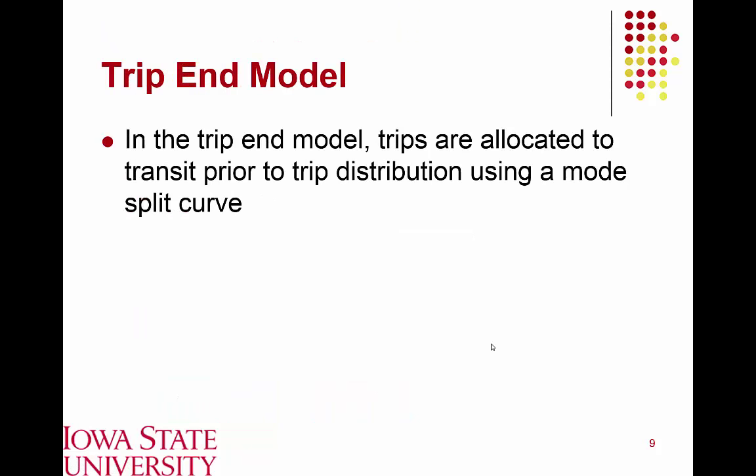The second model, the trip end model, determines prior to trip distribution how many trips are going to be made by each mode — essentially going back to step one, the trip generation step. Under the trip end model, we provide separate estimates for the number of trips that would be generated by auto and by transit.